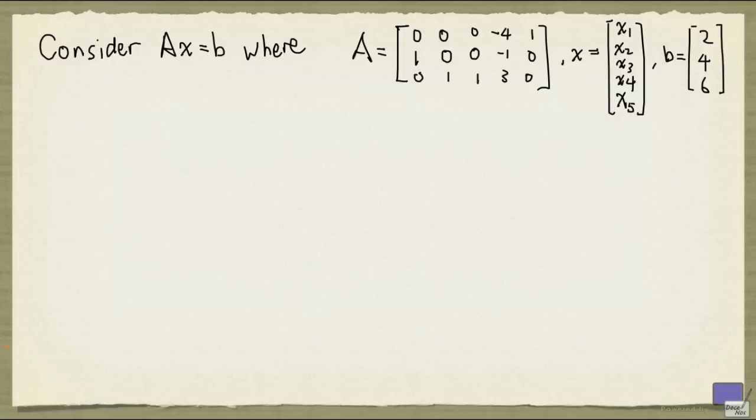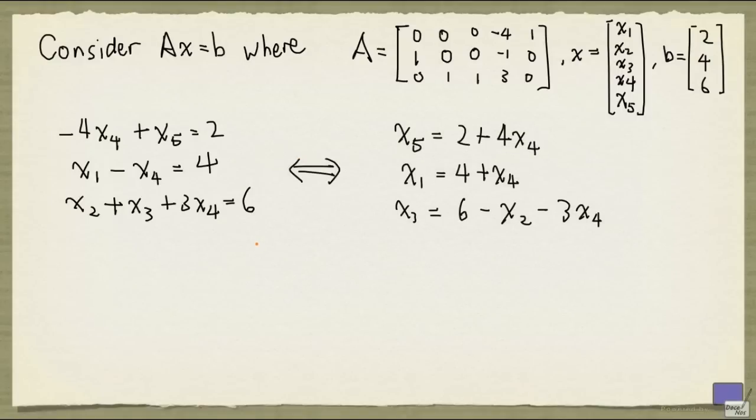If you don't see a solution right away, writing out the system in full might help, and here it is. Now I can rewrite this to an equivalent system. Do you now see what values you can assign to the variables to satisfy these equations?